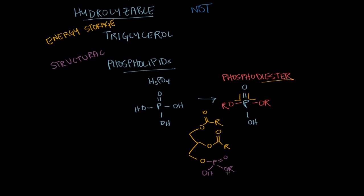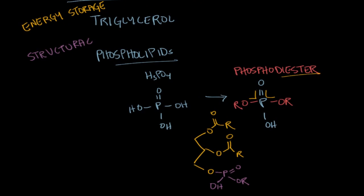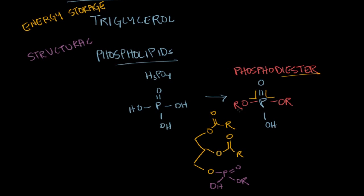So this would be one of the OR groups, this whole rest of the molecule would be the other OR group. And in our bodies, at a pH of around 7.4, this hydrogen right here is actually usually deprotonated, so it usually carries a negative charge on this oxygen. So this right here is a phospholipid.